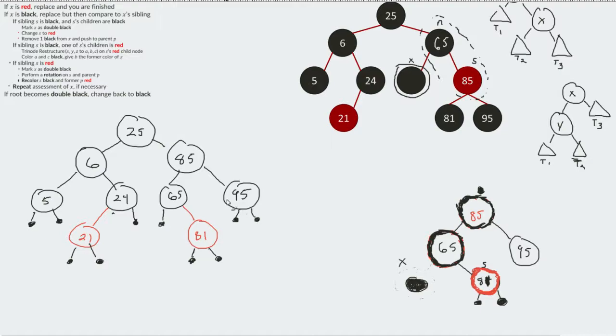So is my root black? Yes, it is. Are all of my children of red nodes black? Yes, they are. What are the other rules? What's my black depth? Well, 1, 2, 3, 4. 1, 2, 3, 4. 1, 2, 3, 4. So once again, I've now set up the rules. Or I've done a proper red-black tree removal.